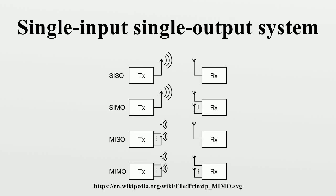In control engineering, a single-input and single-output system is a simple single-variable control system with one input and one output. In radio, it is the use of only one antenna both in the transmitter and receiver.